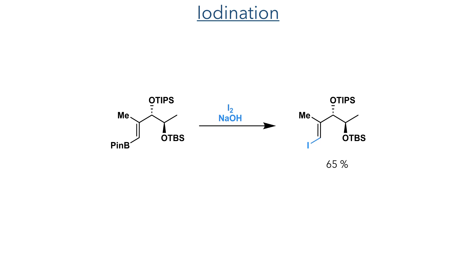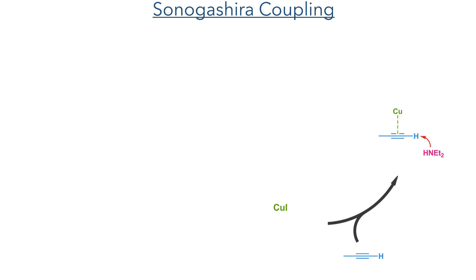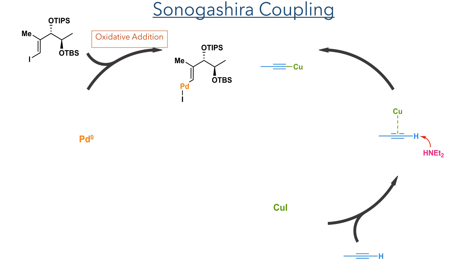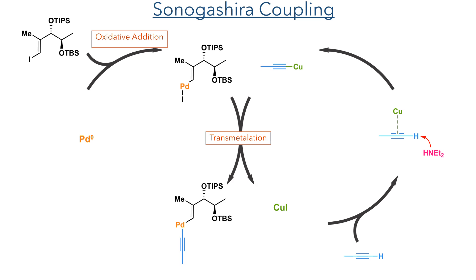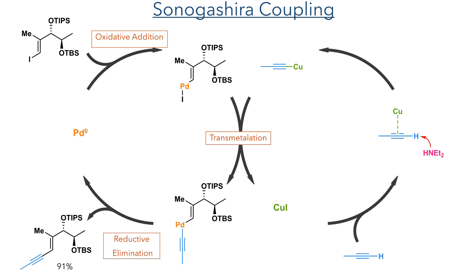Taking this forward, the borane could be converted to an iodide in a 65% yield using sodium hydroxide and iodine. This iodide was required for a Sonogashira coupling. In this reaction, copper iodide first reacts with propyne, forming a pi complex, which is then deprotonated by diethylamine to form a copper alkyne complex. Meanwhile, the iodide coupling partner undergoes oxidative addition with the palladium catalyst to form a carbon-palladium bond. This can undergo transmetallation with the copper species, leaving the alkyne now bound to the palladium. A reductive elimination produced the product in a 91% yield and regenerates the copper and palladium catalysts.